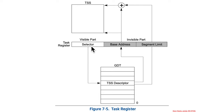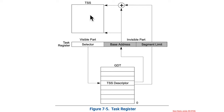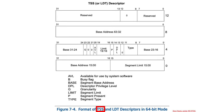Looking at this another way: the task register selector selects from the GDT and points at a TSS descriptor. When this register is loaded, the table from memory is consulted and fills in the cached hidden portion, so it doesn't have to look it up from the table again when accessing the TSS. The base address points to the bottom of this data structure and the segment limit to the top. A TSS descriptor looks exactly like the LDT descriptors we saw a little while ago.